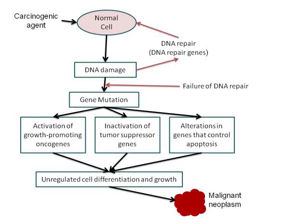Here we have a diagram summarizing everything just discussed. The normal cell comes into contact with a carcinogenic agent, and DNA damage occurs. Sometimes the DNA is repaired by those repair genes. But if the damage moves on to gene mutation, three things happen: activation of growth-promoting oncogenes — essentially signaling the cell to keep making more cells; inactivation of tumor suppressor genes; and alteration of the genes that control apoptosis. The result is unregulated cell differentiation and growth, and we end up with a malignant neoplasm.